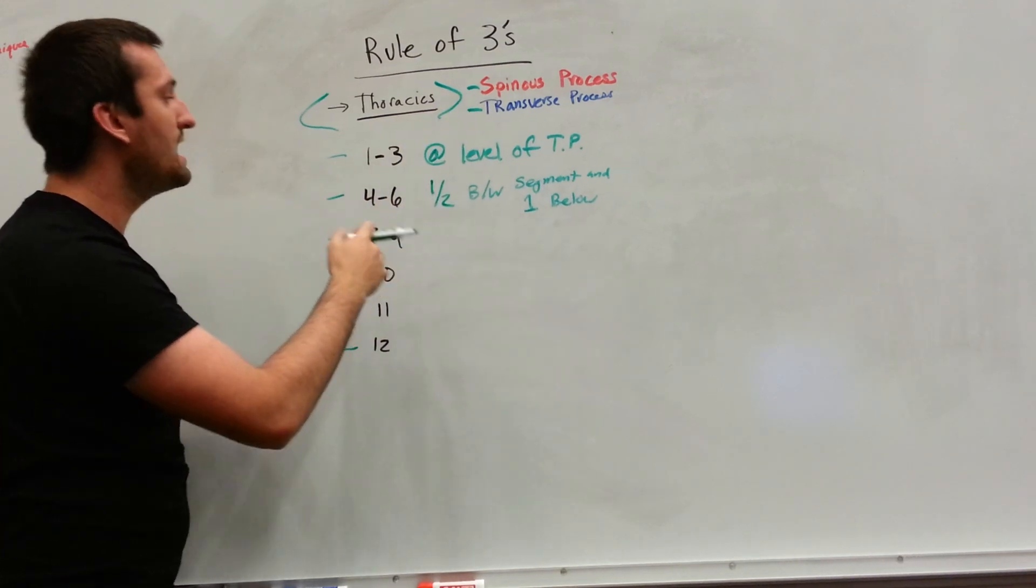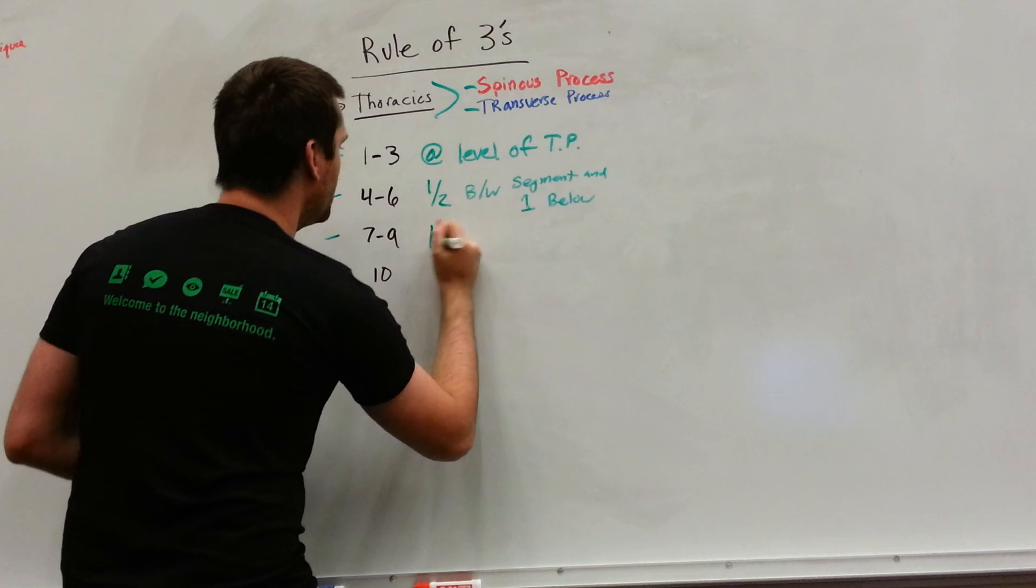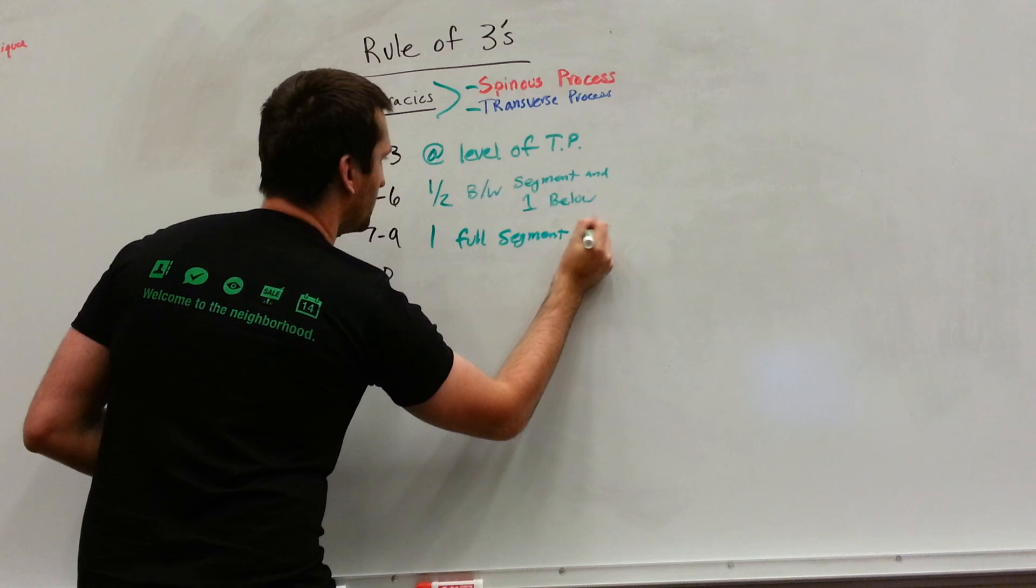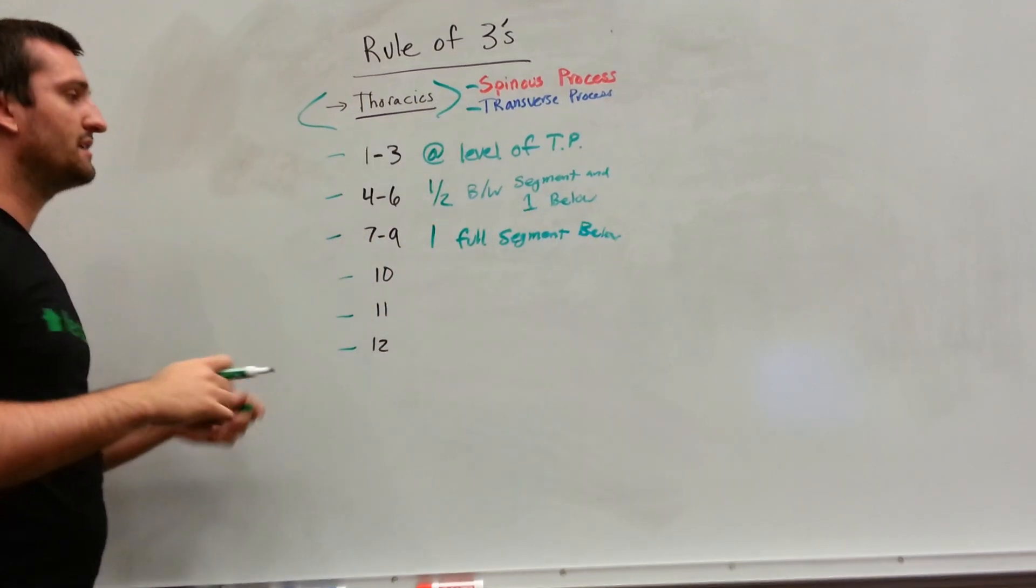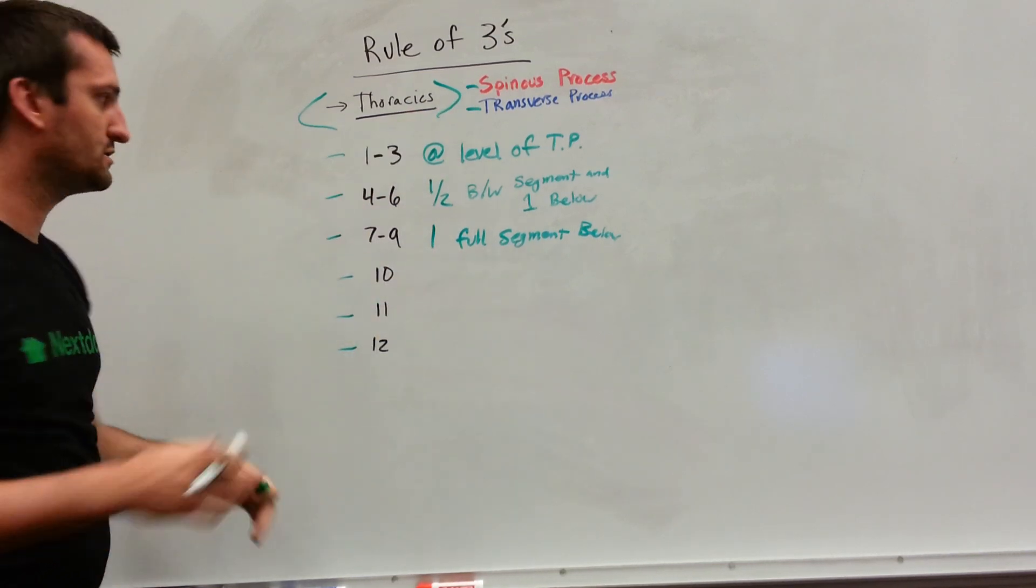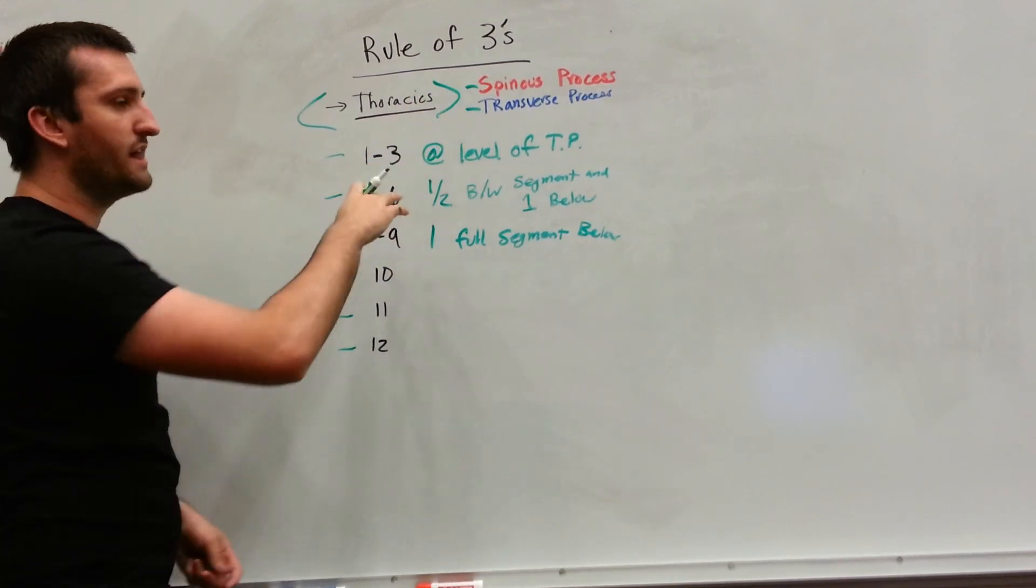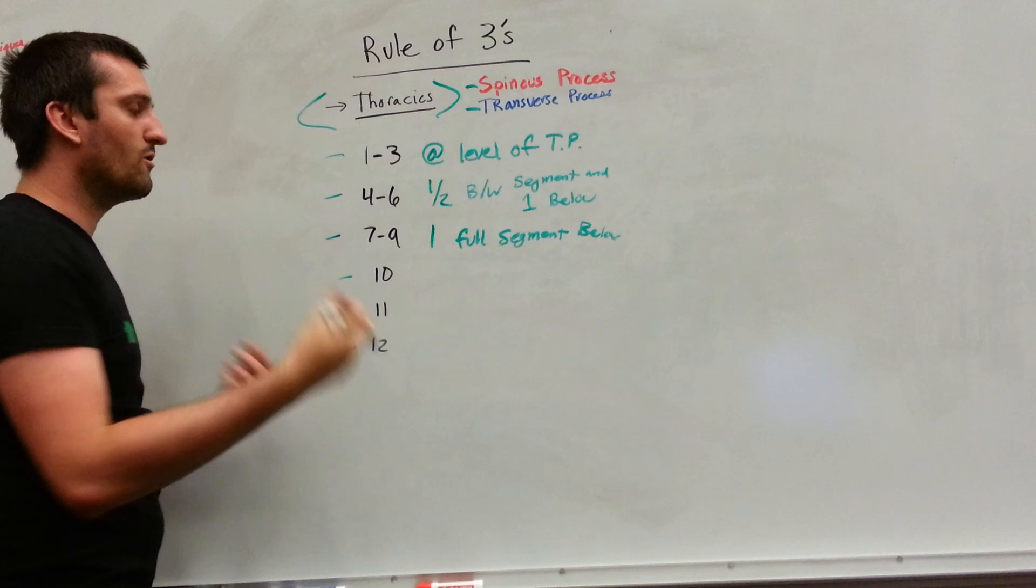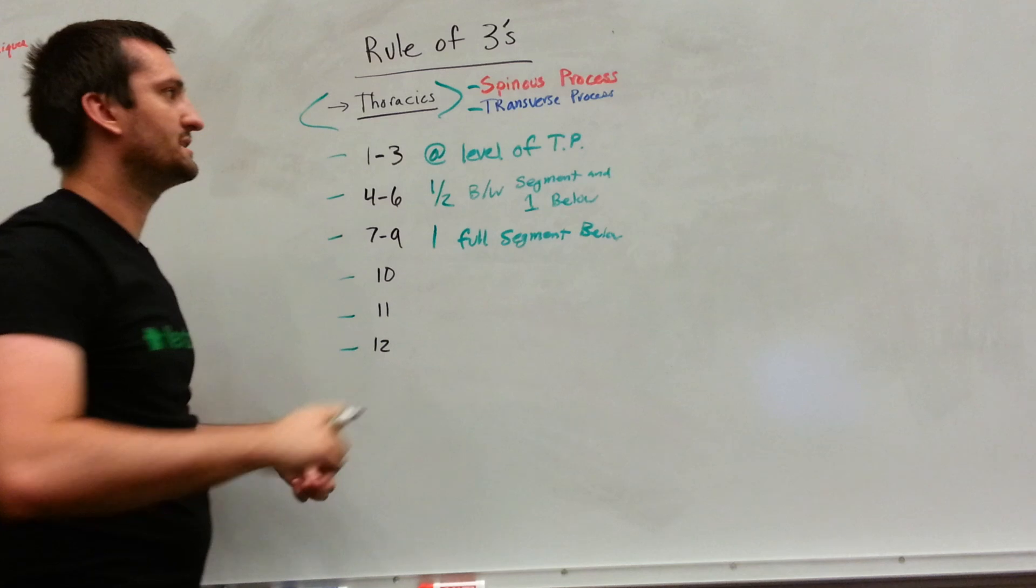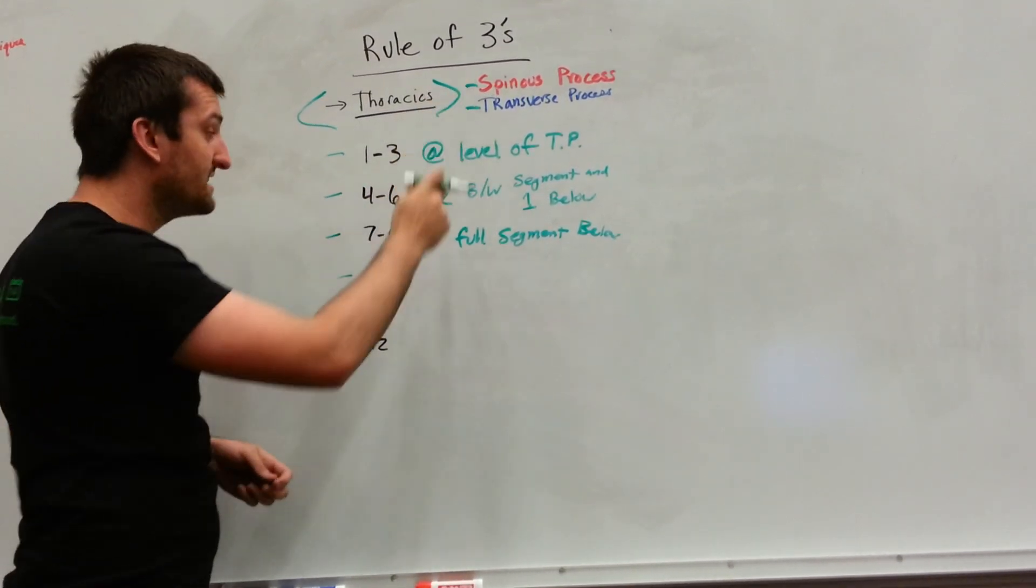And then seven through nine will be one full segment below. The tip of that spinous process will be at the vertebral body or the transverse process of the unit below. So if we're talking about T7, the spinous process will hang all the way down over the body of T8, and we'll be able to see the transverse processes of T8 at the level of the spinous process of T7.